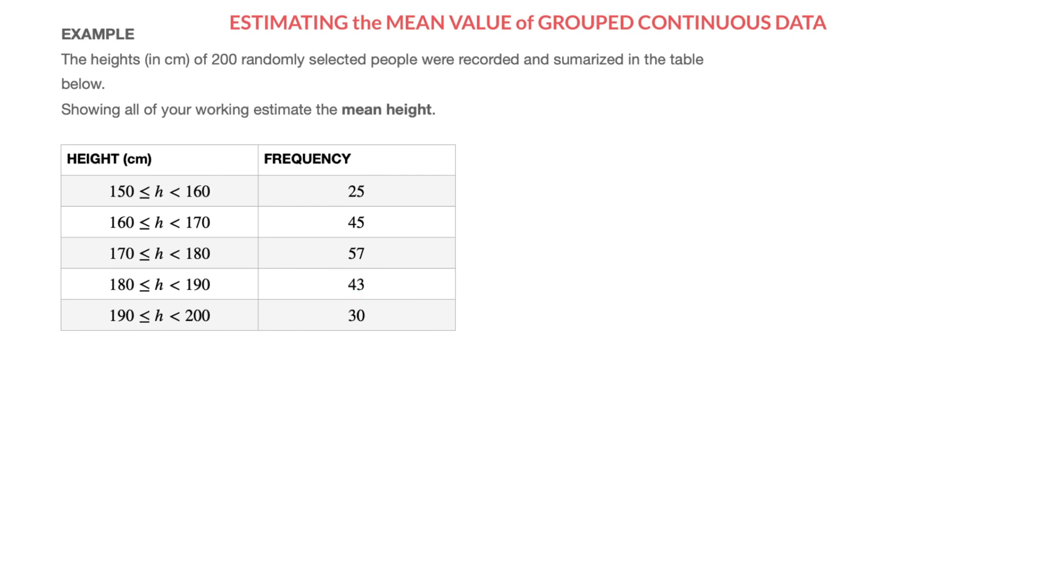For example, there were 43 people whose height was greater than or equal to 180 and less than 190 centimeters. But because we don't know the exact height of each of the people we're dealing with here—indeed, all we know is which class interval they lie in—to make an estimate of the mean height, we're going to add a column to our table.